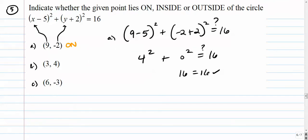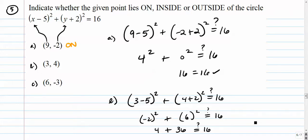Letter b. Just plug it in. We get quantity 3 minus 5 squared plus the quantity 4 plus 2 squared. Does that equal 16? Well, negative 2 squared. 6 squared. Does that equal 16? This is 4 and 36. That clearly does not equal 16.